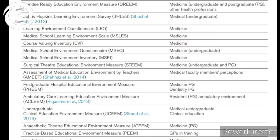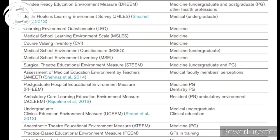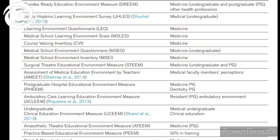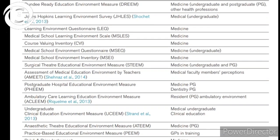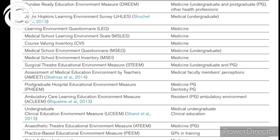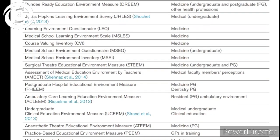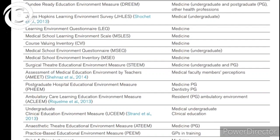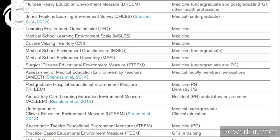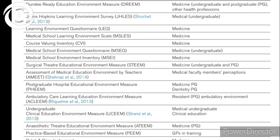These are all different adaptations or derivatives of DREEM for undergraduate and postgraduate training programs. An easy way to remember them is that the ending 'EEM' stands for Educational Environment Measure, and you just add one or two words in front — giving you BEEM, ATEEM, STEAM, ACLEEM, PHEEM, and DREEM. I hope this video has made it clear how to measure the educational environment. Thank you very much.